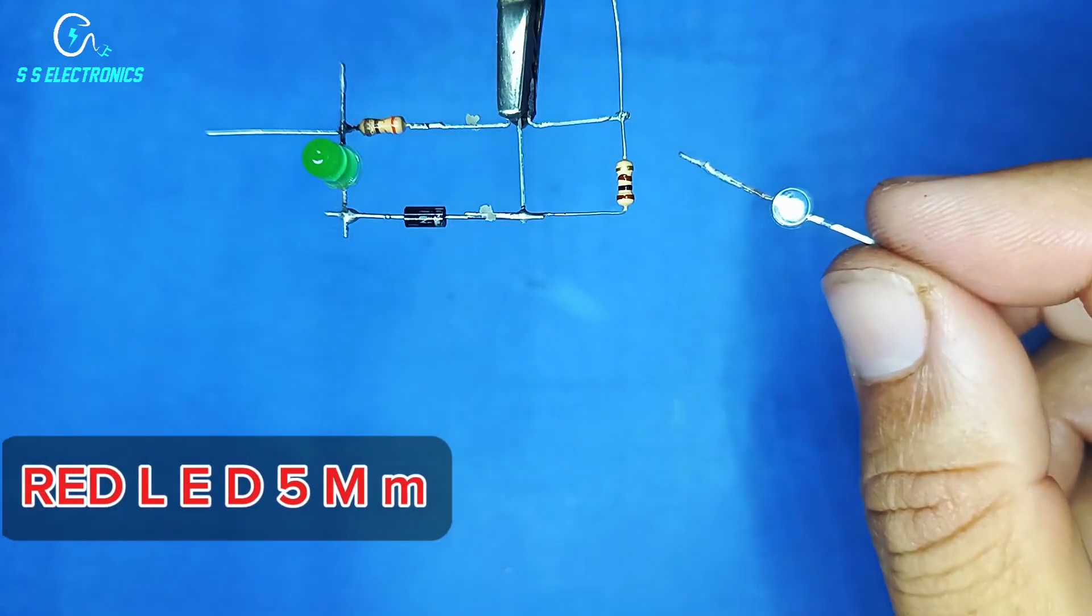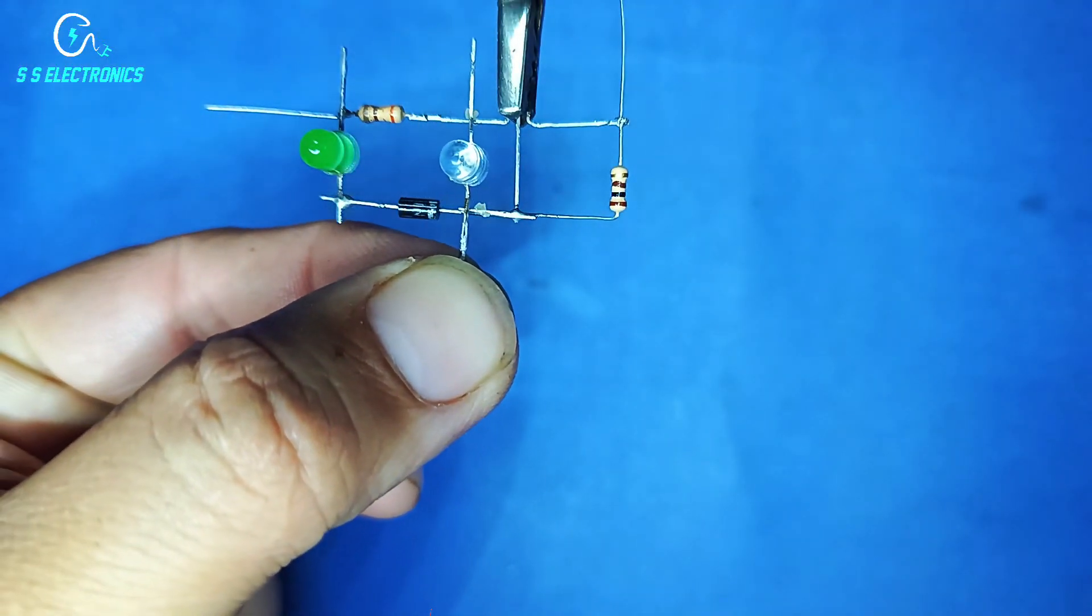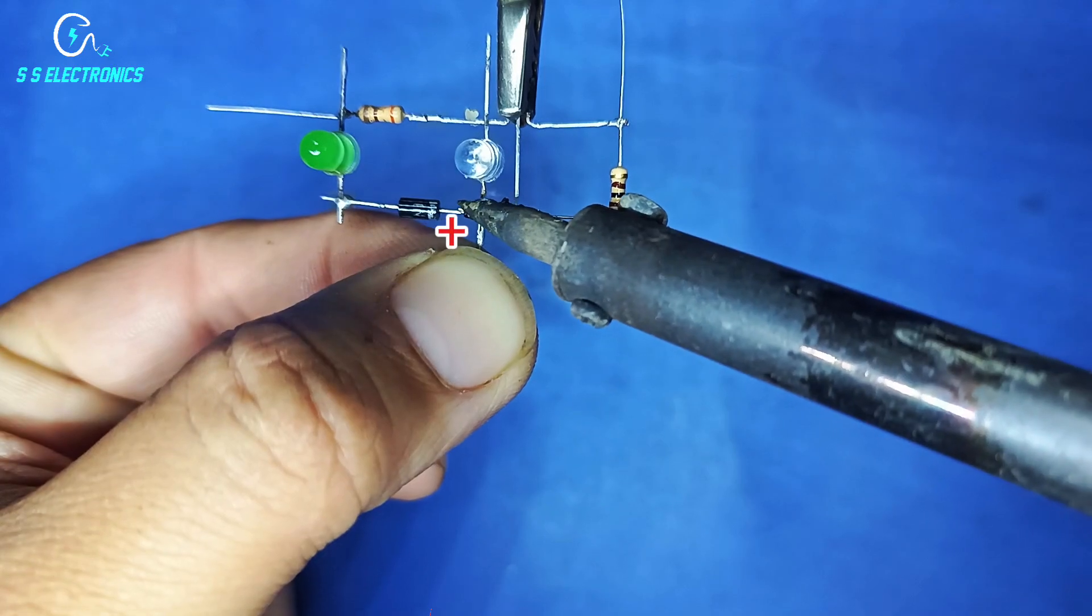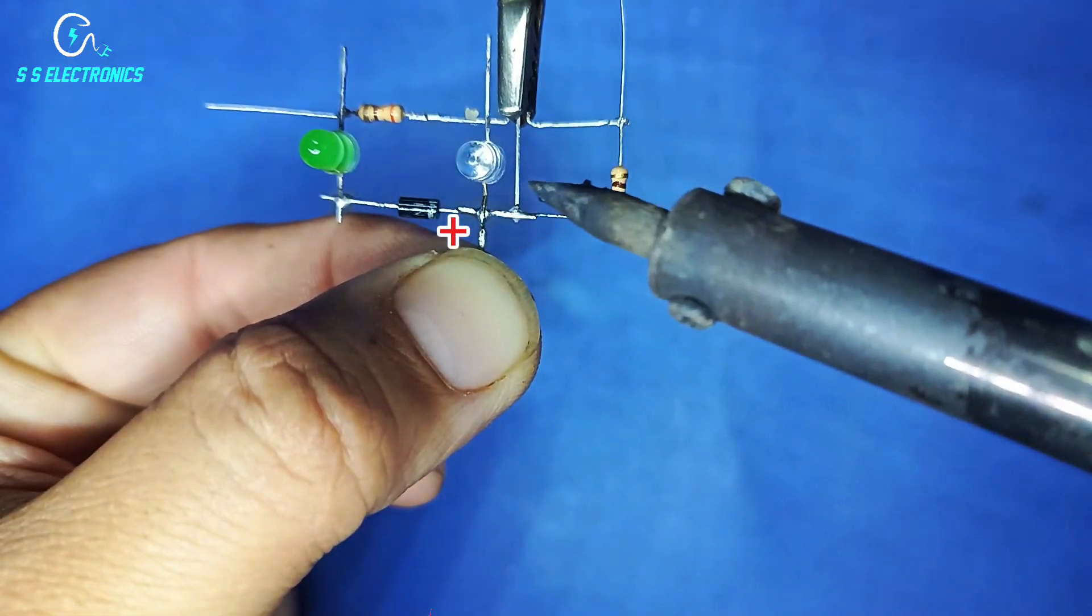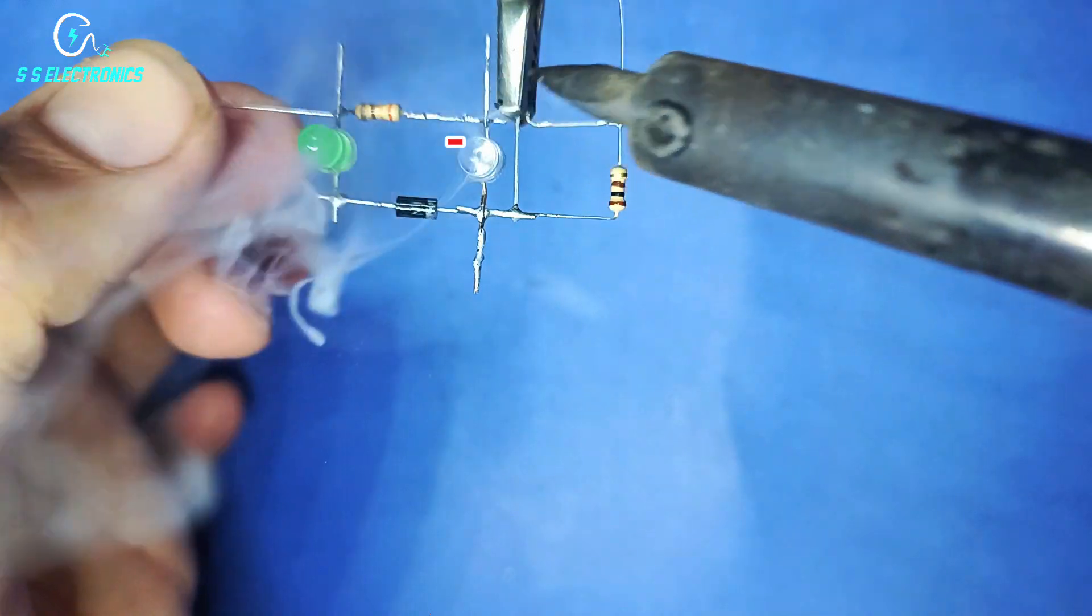Red LED 5mm. Red LED positive side connecting with diode cathode side pin. Red LED negative side connecting with 330 ohm resistor.